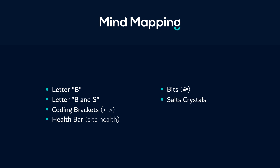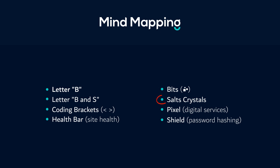Since the company is providing digital services, we can use an abstract mark of a pixel to represent their digital services. We can also use a shield to emphasize security monitoring or password hashing complexity. I have decided to use the combination of the letter B, bits, salt crystals, and also a pixel.